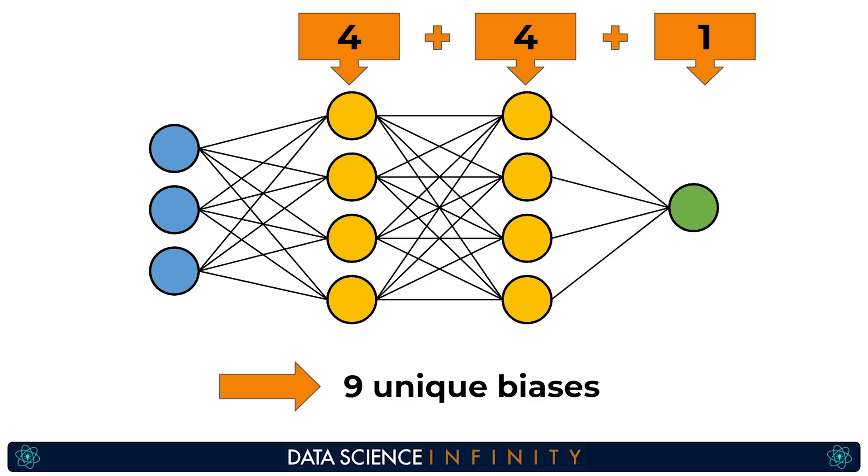So we would say that this particular network has a total of 41 unique parameters. Anyway I think that is enough high level jibber jabber. How does the network use these weights and biases?